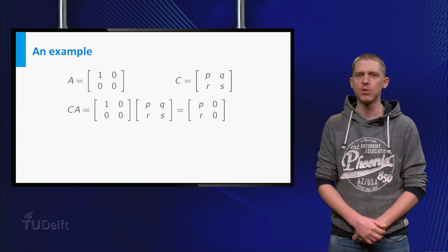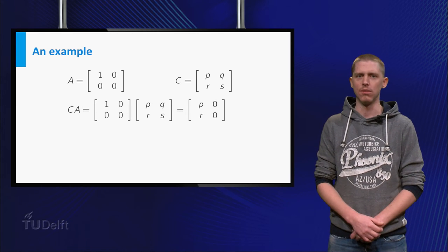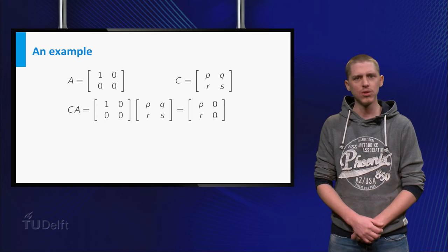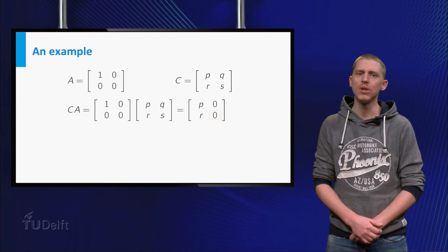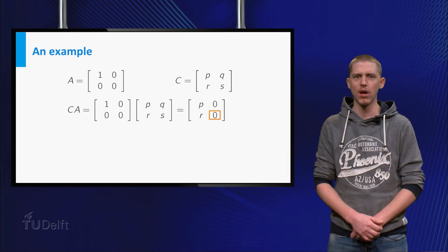The product of C and A is P, 0, R, 0. If you want this to be equal to the identity matrix, you see that this can never happen because of the 0 at the lower right corner.